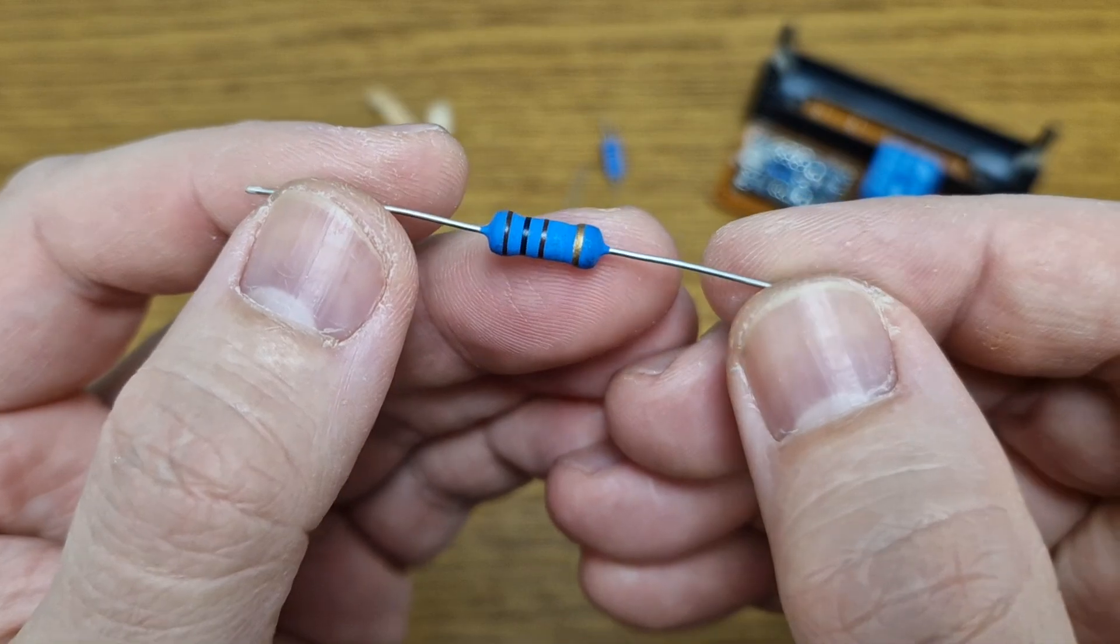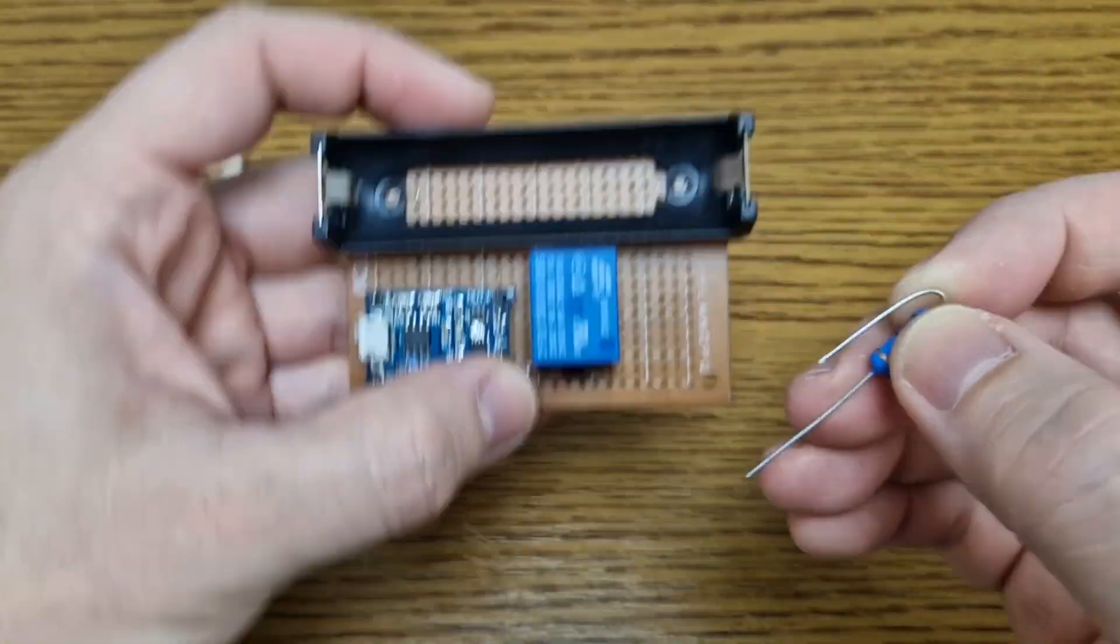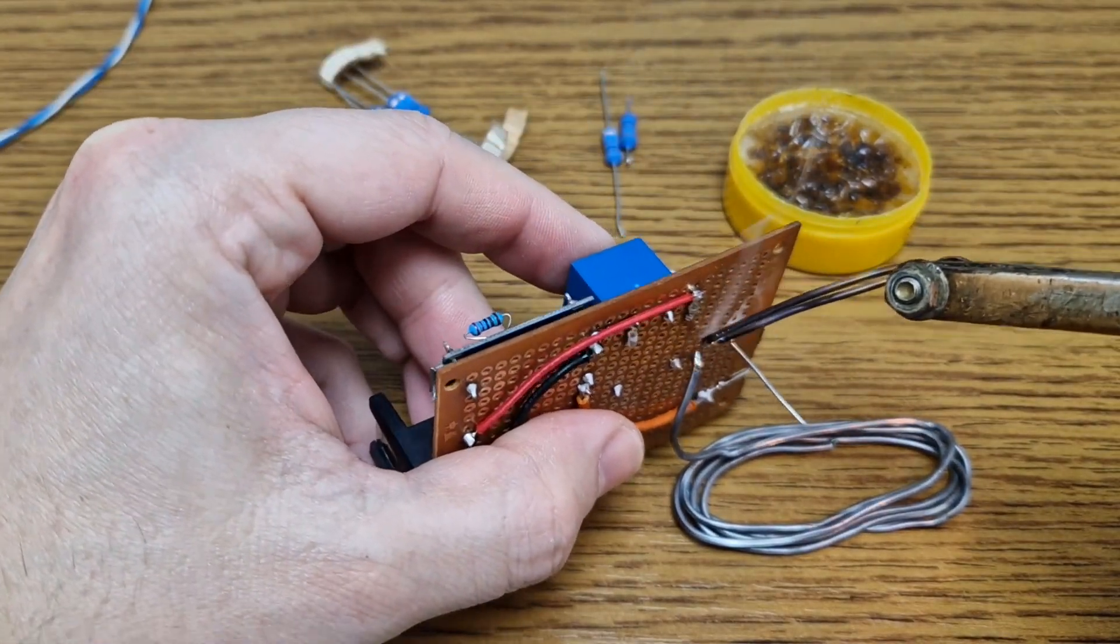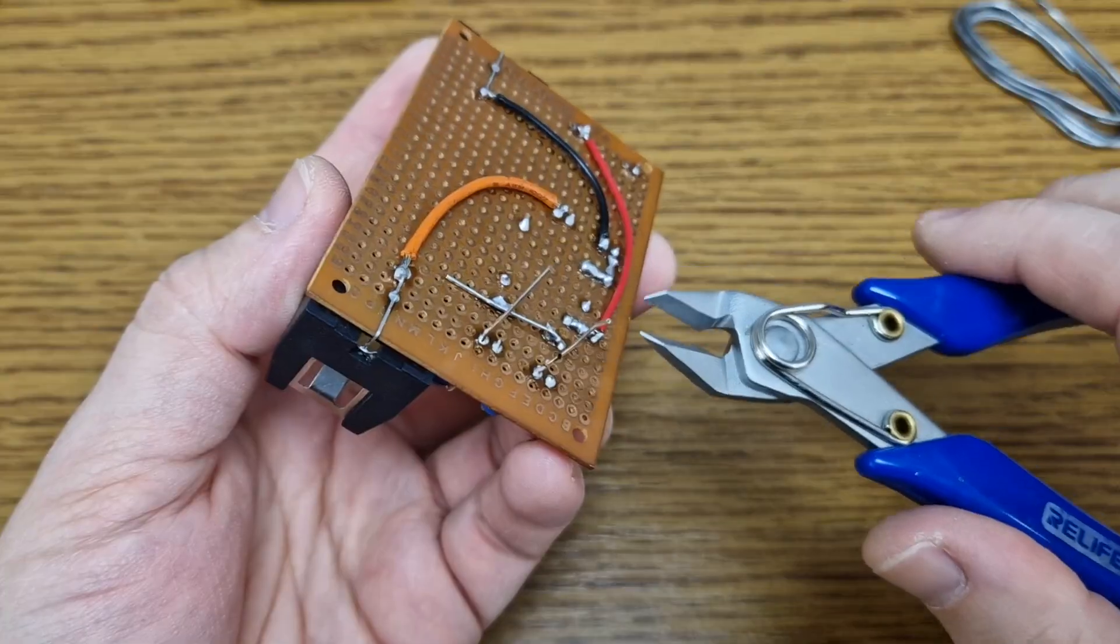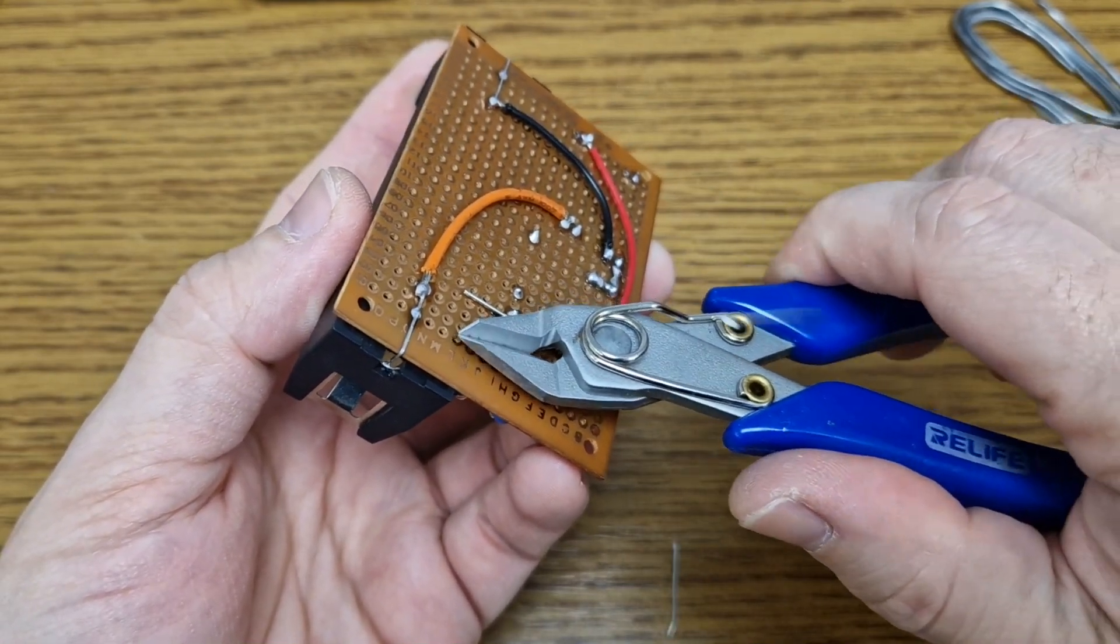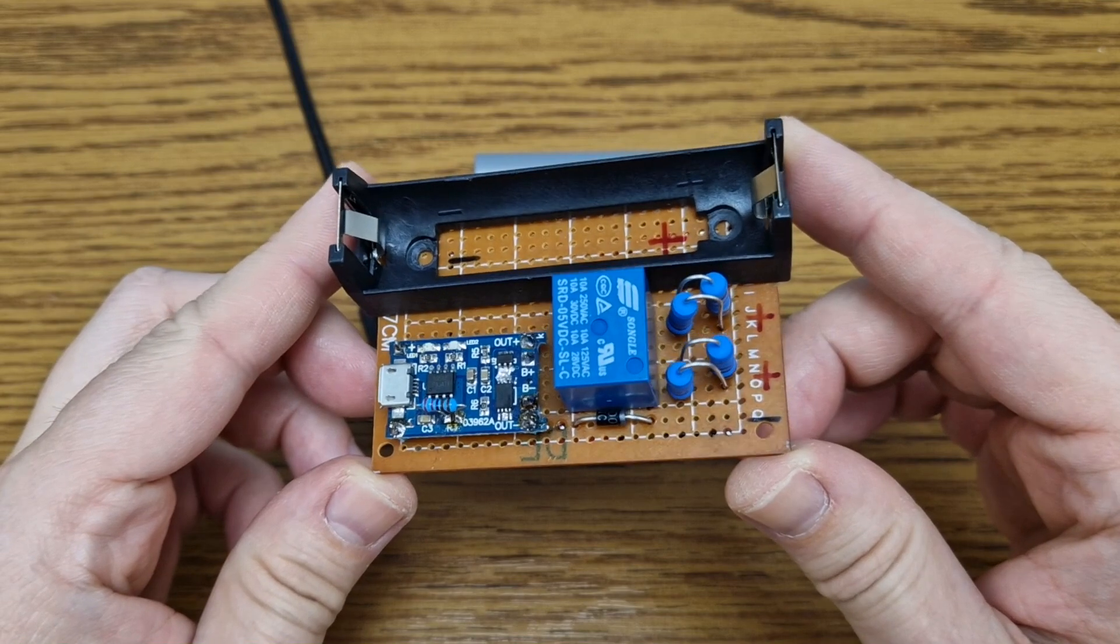But all I have at the moment are these 3 Watt and 100 Ohm resistors. So, I will solder two of them in parallel to get 50 Ohms. And the circuit is finished.